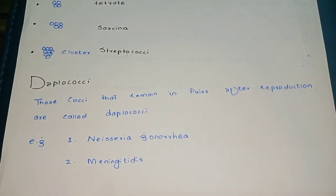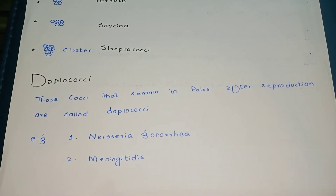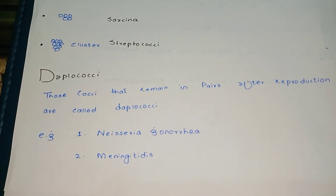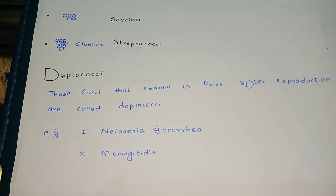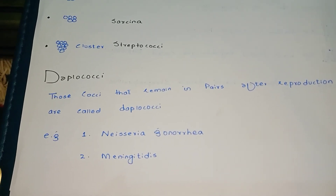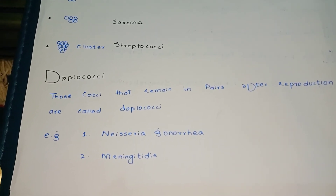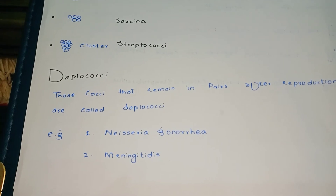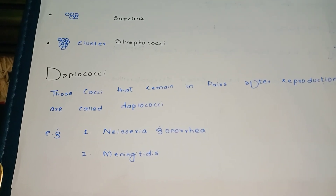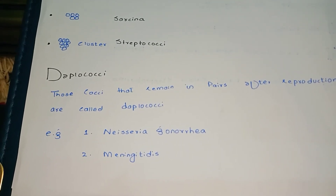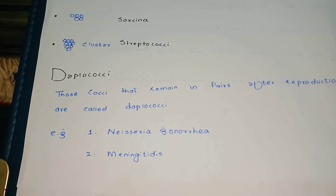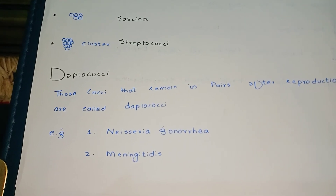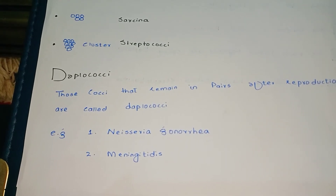One example of diplococci is Neisseria gonorrhoeae, which causes gonorrhea, and Neisseria meningitidis, which causes meningitis — swelling in the brain meninges and cell death.